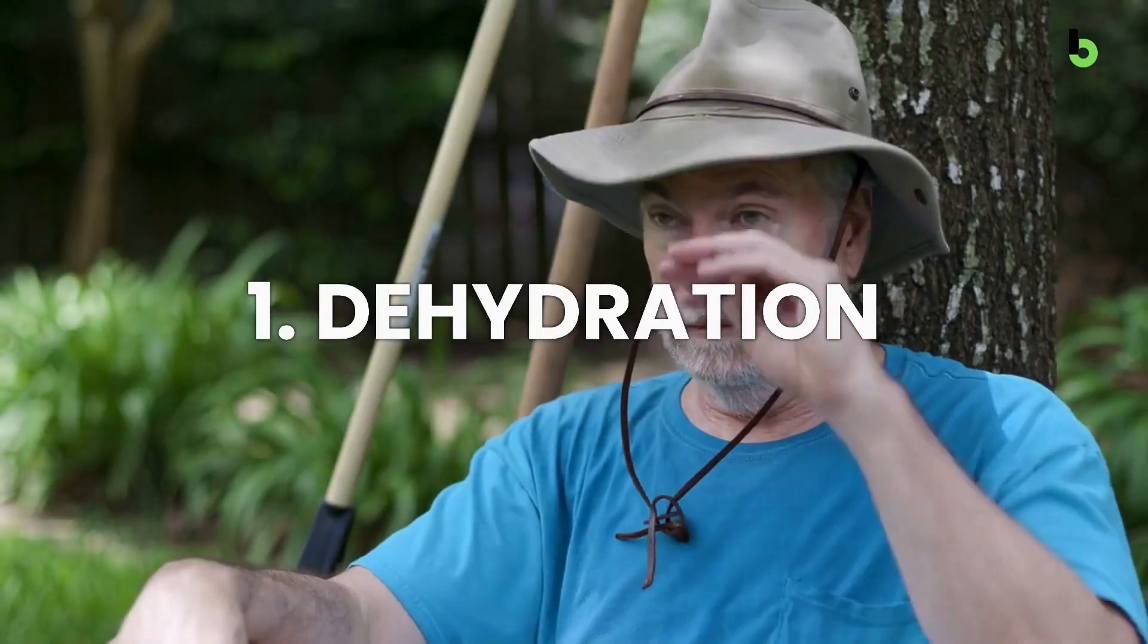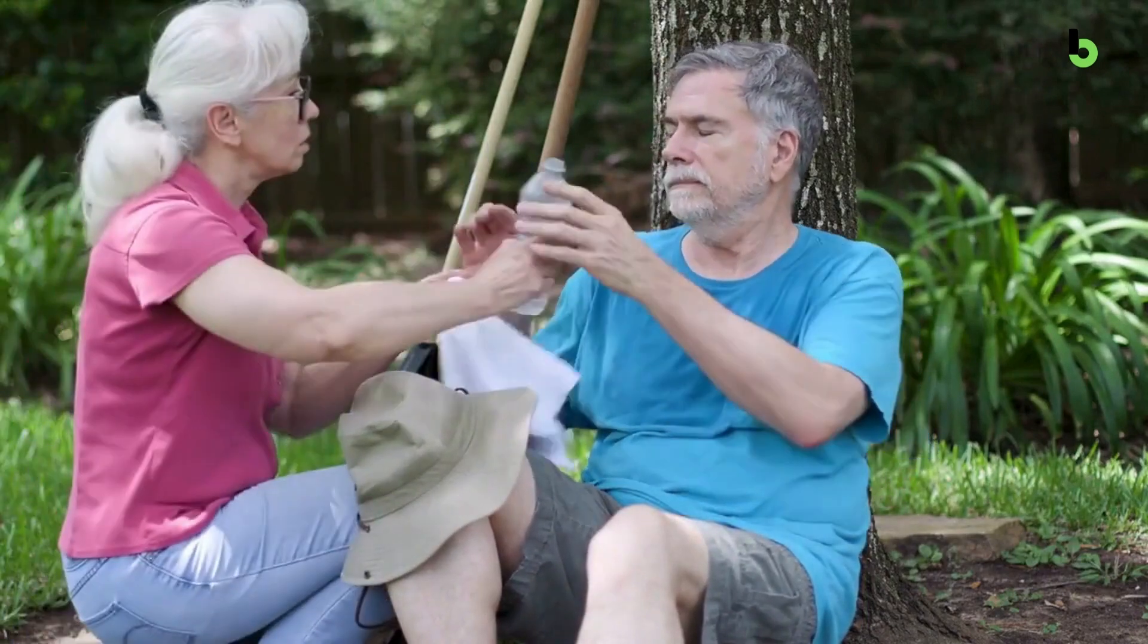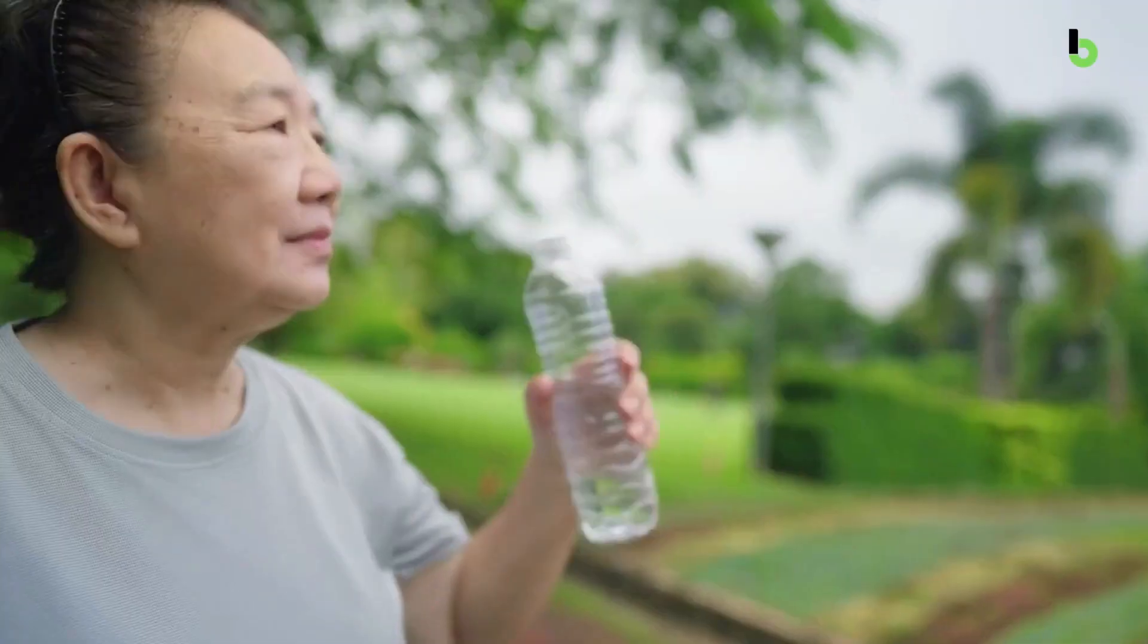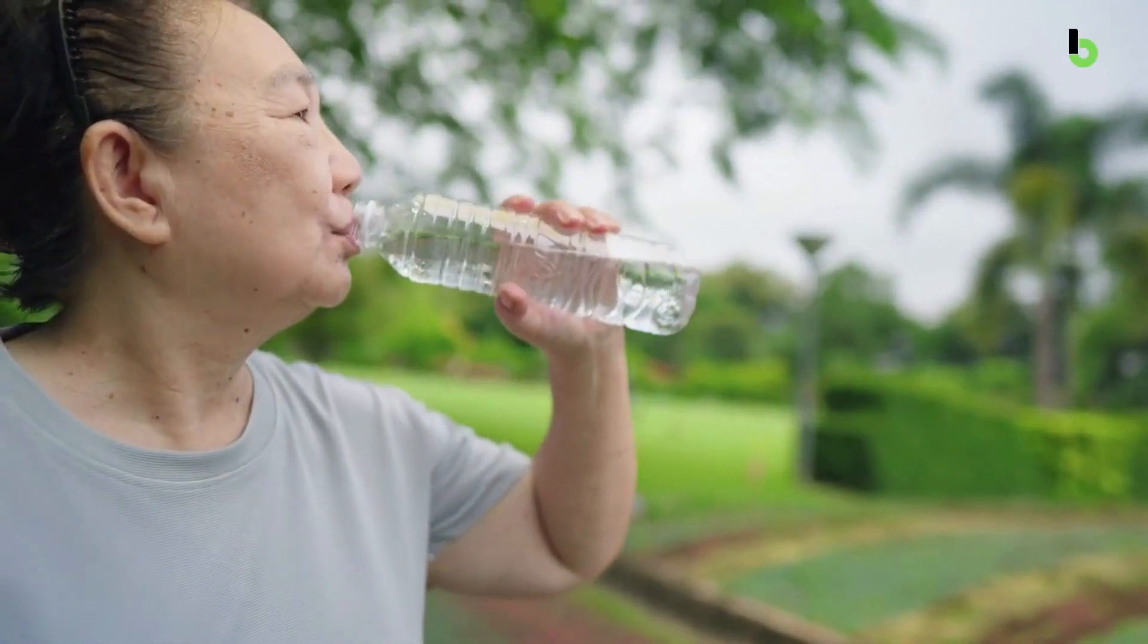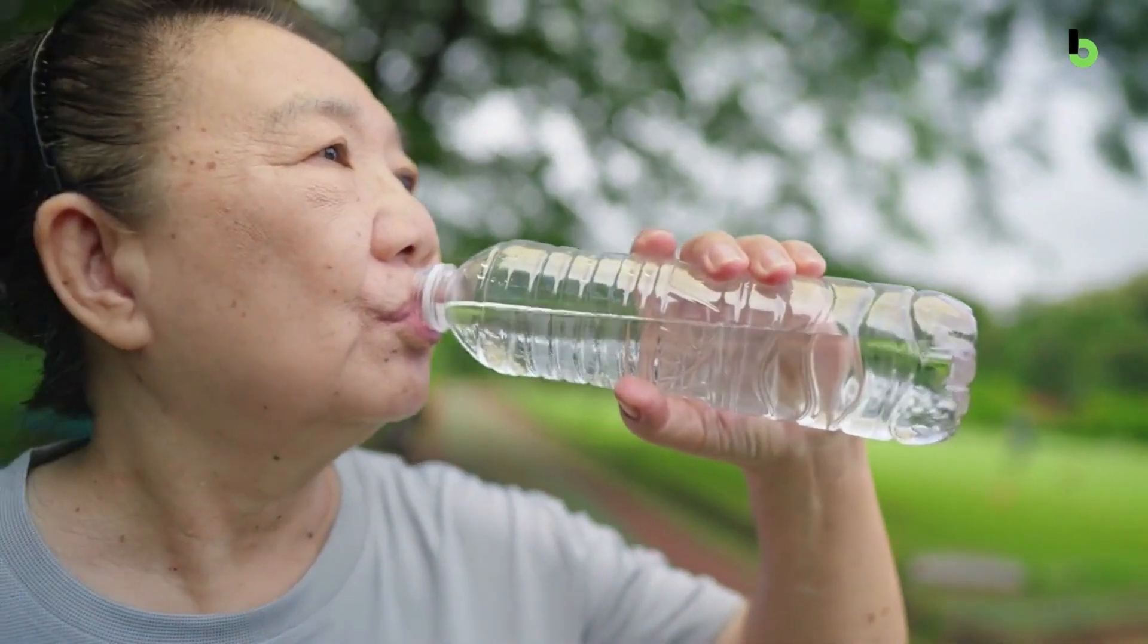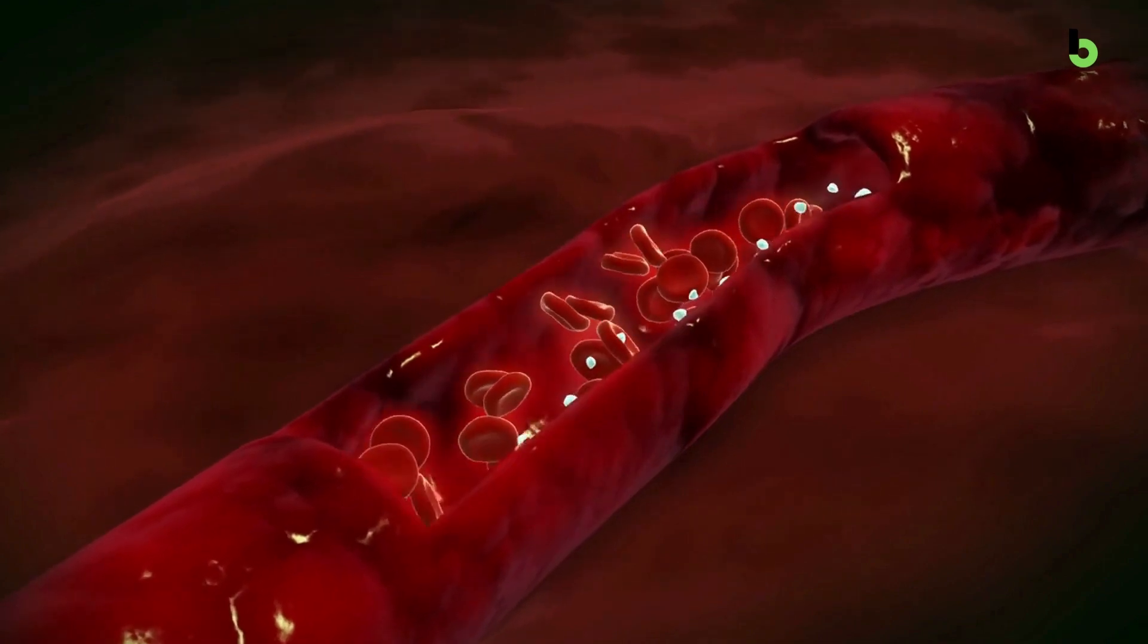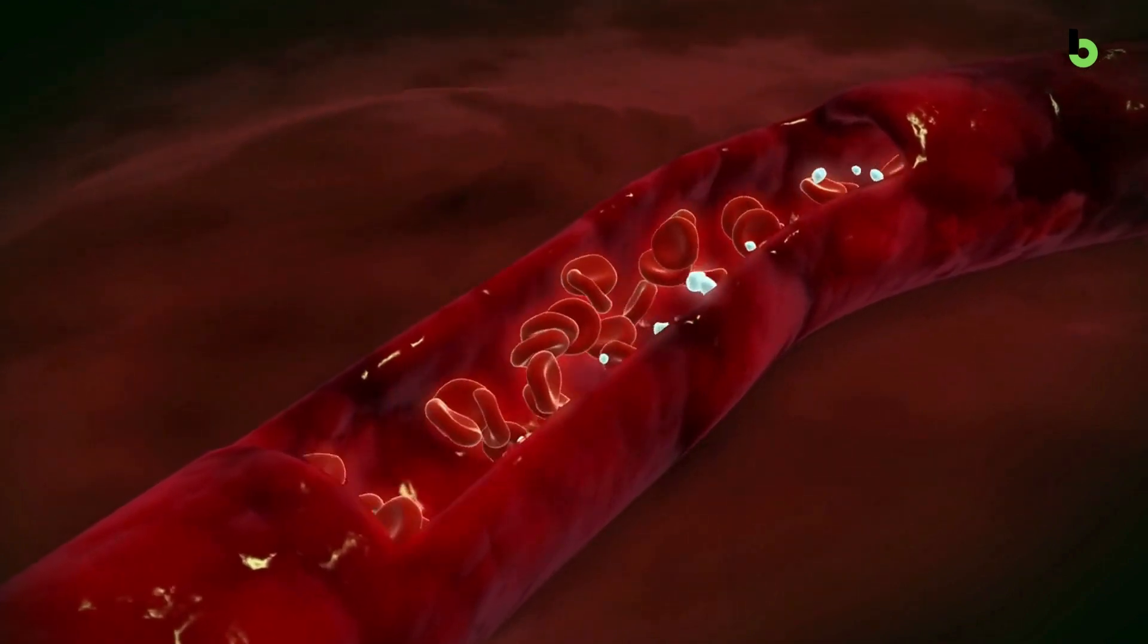Number 1: Dehydration. Dehydration can be harmful to the kidneys because the kidneys need a sufficient amount of water to function properly. When the body is dehydrated, the kidneys have to work harder, which can damage their delicate structures over time. Dehydration reduces blood flow to the kidneys. This can impair the kidney's ability to filter waste products from the blood and maintain fluid and electrolyte balance.